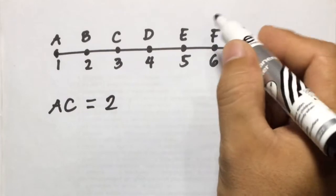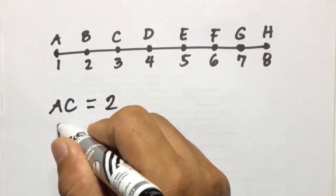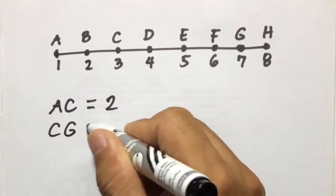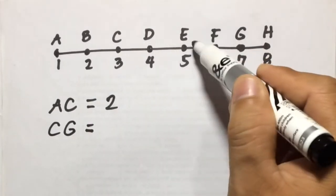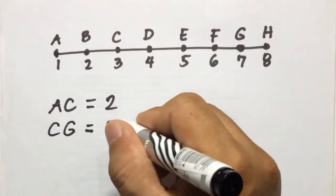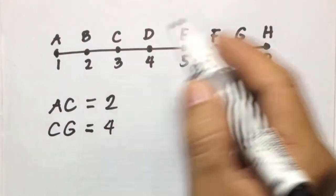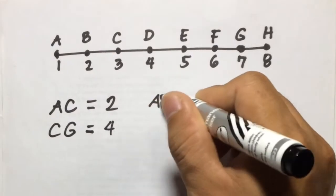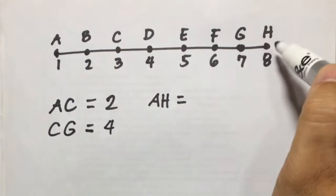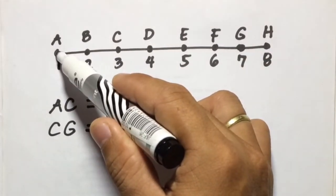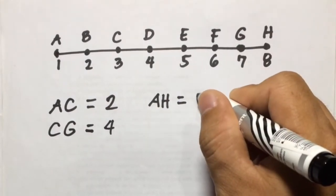If we find the distance of line segment CG, we count from C to G: 1, 2, 3, 4 — so CG is four units. And if we find the distance of AH, from point A to point H, we count: 1, 2, 3, 4, 5, 6, 7 — so AH is seven units.